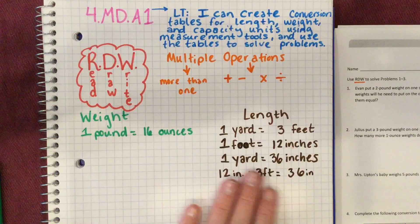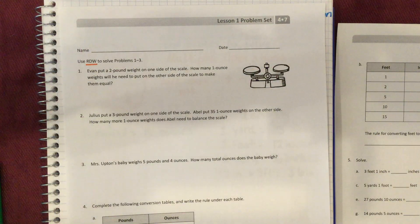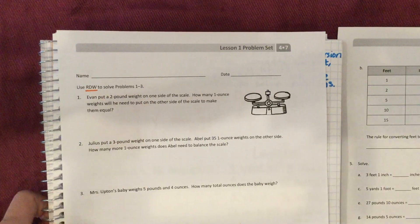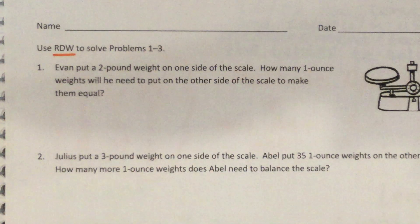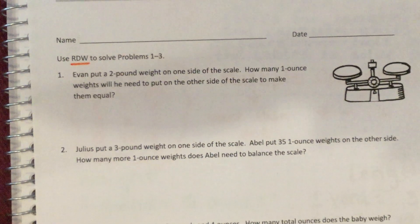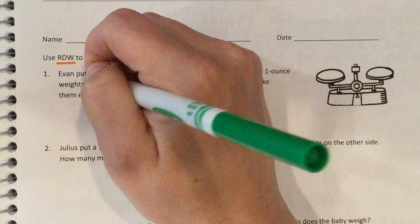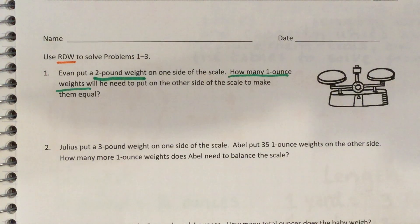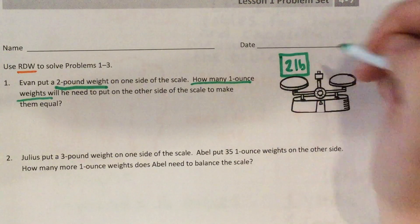Let's go ahead and get started with page one from lesson one. We're going to read, draw, and write to help us with number one. Number one says: Evan put a two-pound weight on one side of the scale. How many one-ounce weights will he need to put on the other side to make them equal? So I'm going to draw on this side of the scale — he has two pounds.